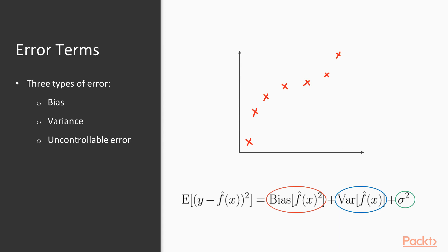One of the central topics of model building is reducing error, error referring to prediction error or how off our decision function's generalizations are. However, there are several types of error, two of which we have control over to some extent. These are called bias and variance. There's a trade-off in the ability for a model to minimize either bias or variance, and this is called the bias-variance trade-off or the bias-variance dilemma.